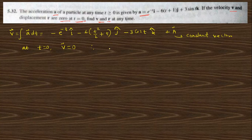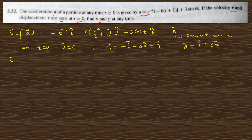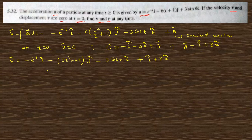To find this constant we have the initial condition: at t equals 0, v equals 0. So put this in — the left hand side is 0. On the right hand side, e to the power 0 is 1, so this is minus i-cap; this term is 0; and cos(0) is 1, so minus 3 k-cap plus the constant vector a. So the value of a vector is i-cap plus 3 k-cap.